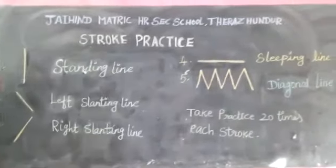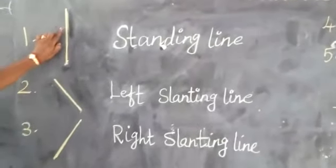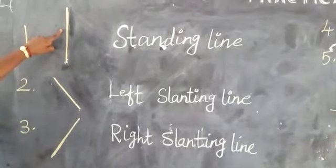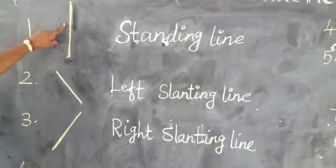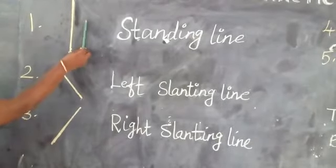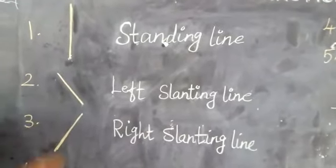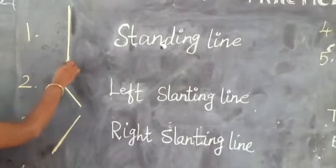First one is standing line. All of you tell me, first one is standing line. Standing line means nehra ahar. This is standing position. Draw a line downwards like this. This is standing line.